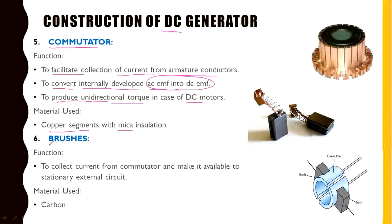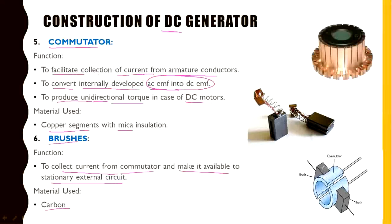One more important component is the brushes. The function of the brushes is to collect current from the commutator and make it available to the stationary external circuit. The brushes are made of a soft material called carbon. The current present in the commutator is taken by the brushes and delivered to the external circuit — so the output is taken from the brushes.